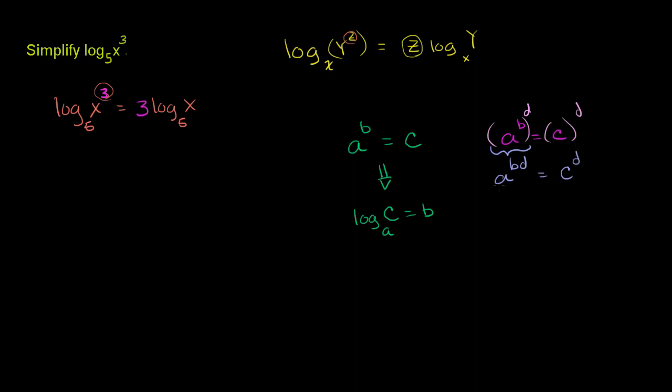Now this exponential equation, written as a logarithmic equation, would be log base a of c to the d-th power equals bd. What power do I raise a to to get c to the d-th power? The bd power.